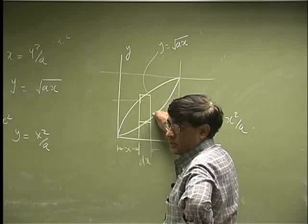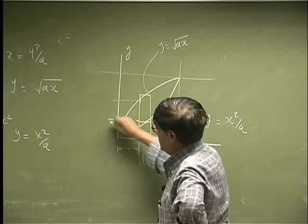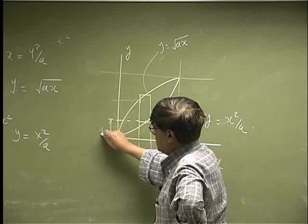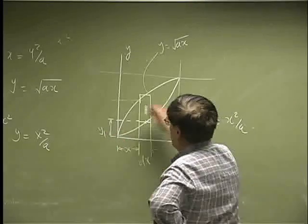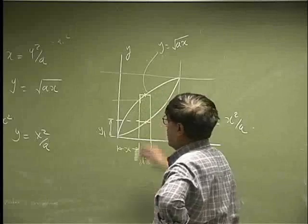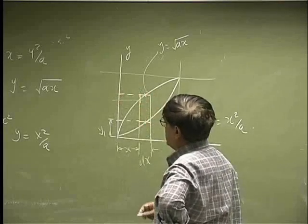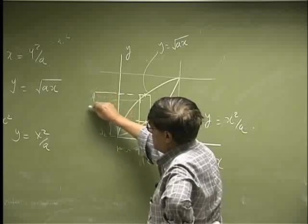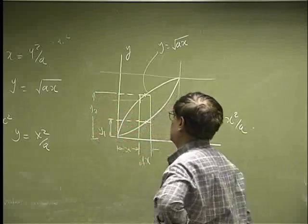The bottom of the rectangle meets the bottom curve, and we take that distance — let's say that distance is y1. Then the place it meets the second curve, we take that distance and let's call it y2.